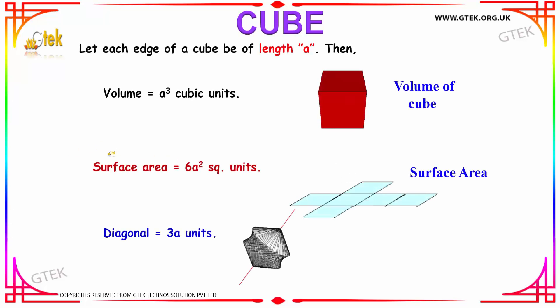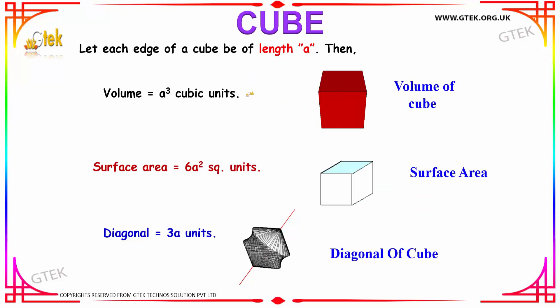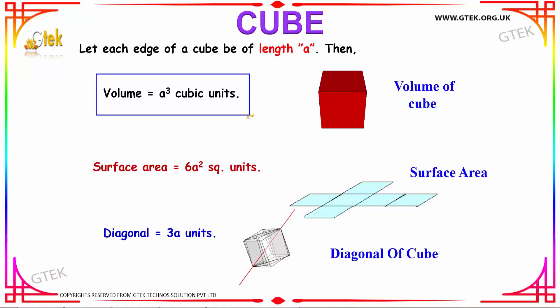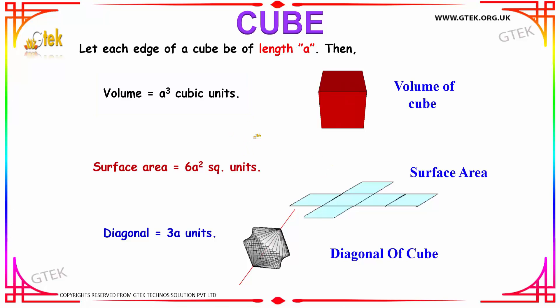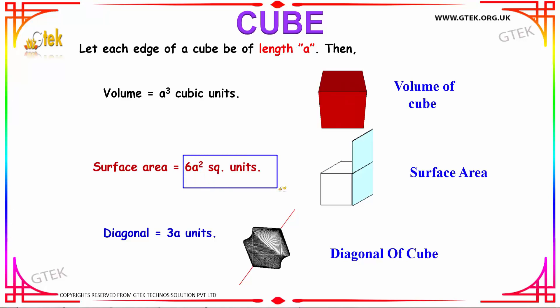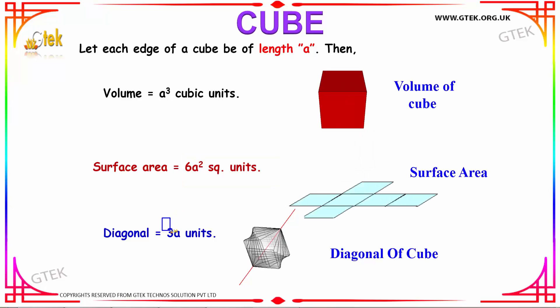Moving on to cube. A cube is nothing but a three-dimensional structure of a square. Just like a square, the length is the same on all sides. Let their length be A. Then the volume of the cube is calculated using A³ — that is, A × A × A. The surface area of a cube is the area of six squares, hence 6A² square units. The diagonal of a cube is found using the formula √3 × A, where A is the side of the cube.